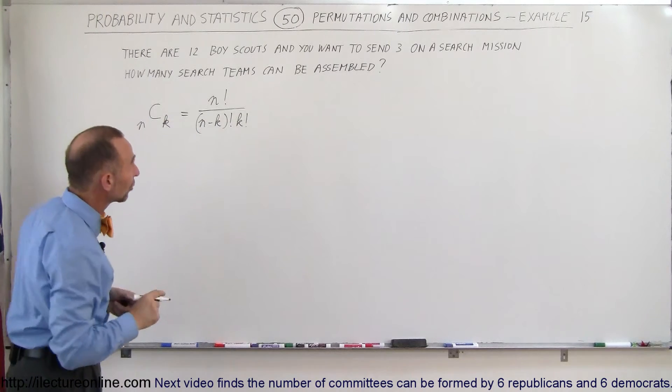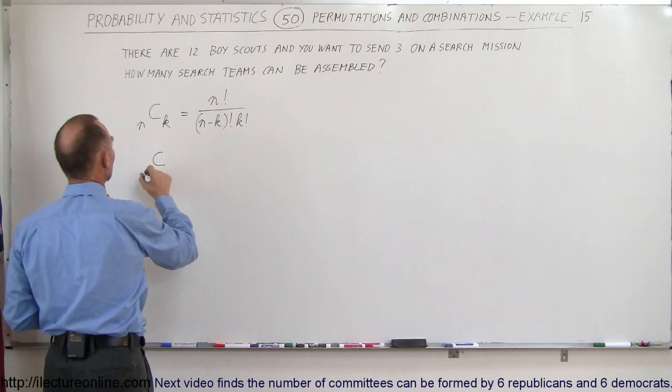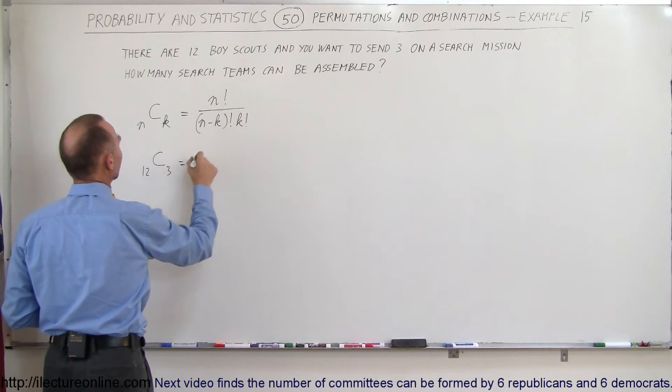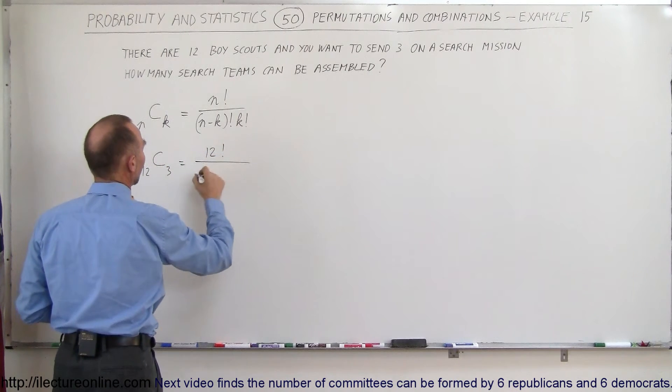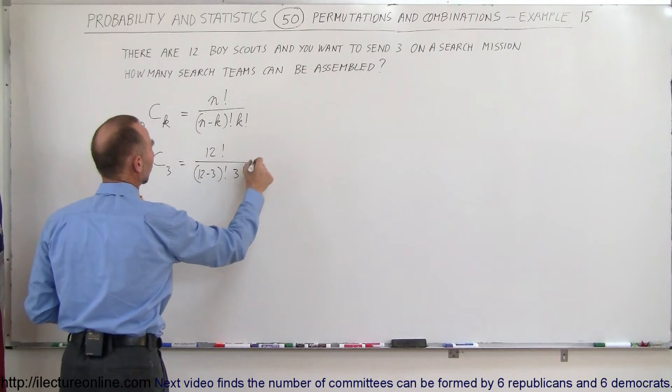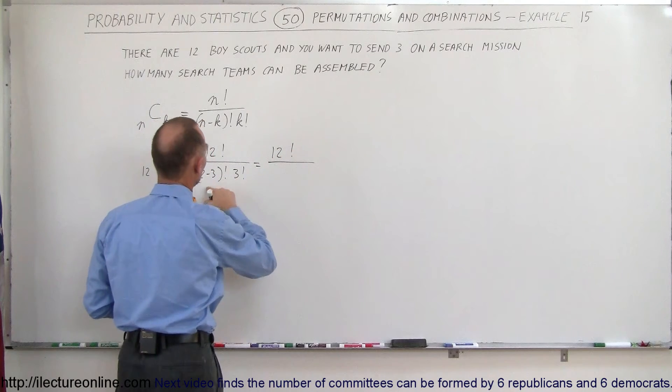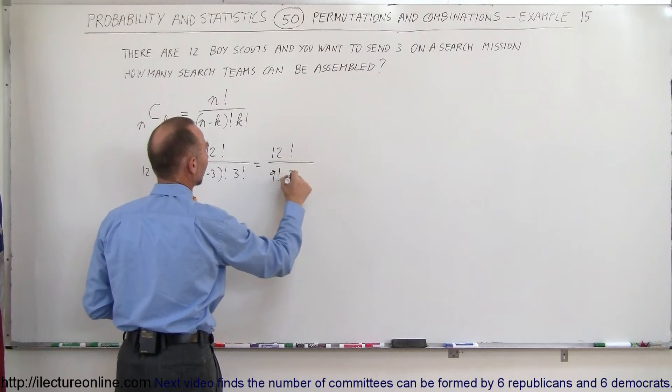So in this case, since there's 12 Boy Scouts and three go on a search mission, you can say that the number of combinations with 12 and 3 is equal to 12 factorial divided by 12 minus 3 factorial times 3 factorial. So this would be equal to 12 factorial divided by 9 factorial times 3 factorial.